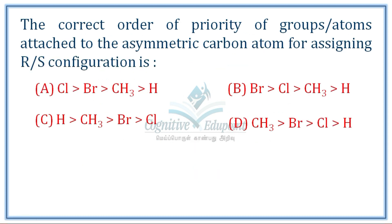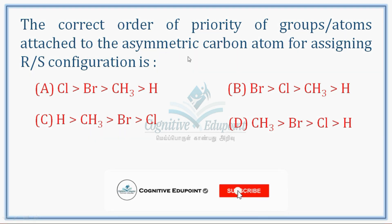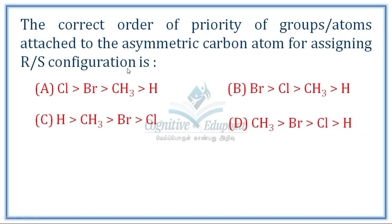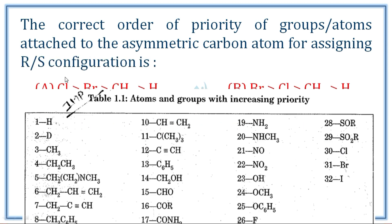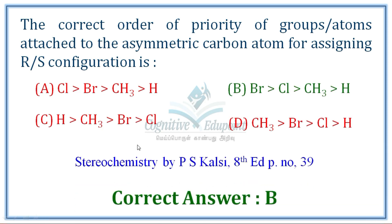Next question: the correct order of priority of groups or atoms attached to the asymmetric carbon atom for assigning R/S configuration. Arranging by atomic number: Bromine > Chlorine > Methyl > Hydrogen. Correct answer is B.